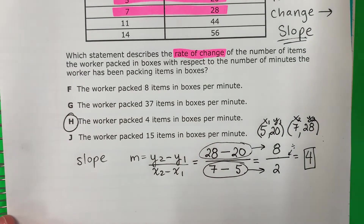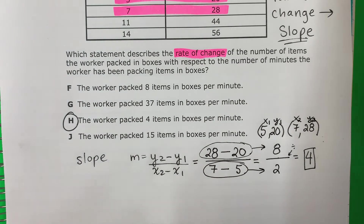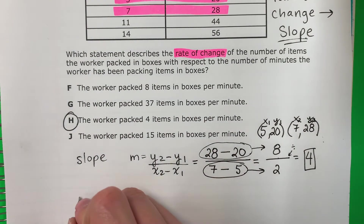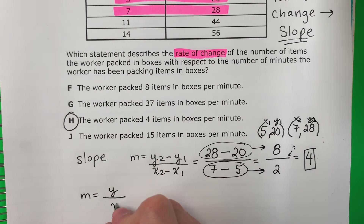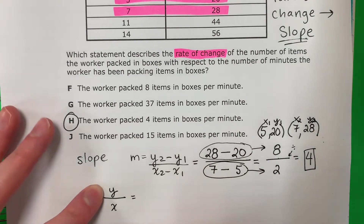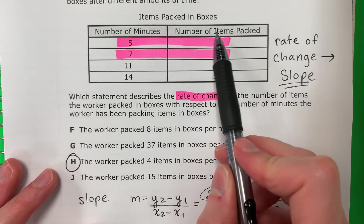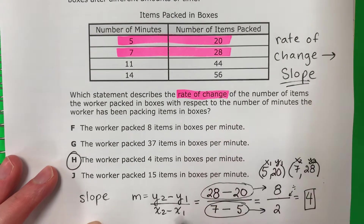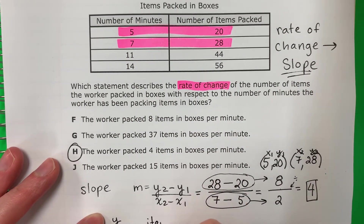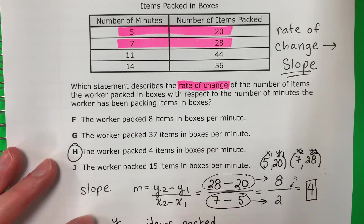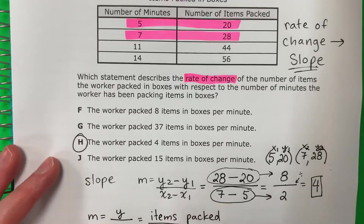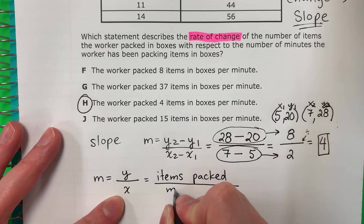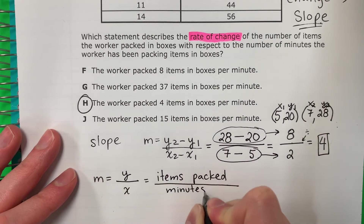So H is my answer. Now remember for what it represents. ¿Por qué se representa? You remember slope — you have the y up, la y arriba, and the x down. So y — what is y? Y is the number of items packed. And then divide. X is minutes.